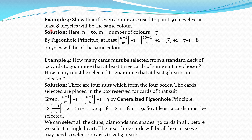We have to show that at least 8 bicycles will be of the same color, meaning 8 bicycles will be in the same box. By the Generalized Pigeon Hole Principle, floor of (n-1)/m plus 1 equals floor of (50-1)/7 plus 1, which equals 7 plus 1, equal to 8. So minimum 8 bicycles will be of the same color.